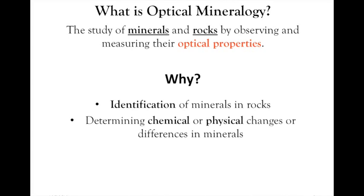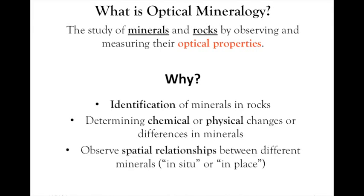We can also look at how chemical or physical changes occur in minerals. Effectively, we can look at individual crystals in a rock specimen and oftentimes say something useful about how the chemistry of that crystal changes — for example, in proximity to the surface versus the center of a crystal. We can also look at spatial relationships between different minerals, because we're actually looking at minerals in situ, or in place.